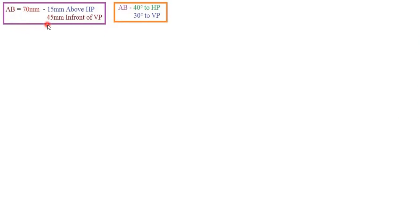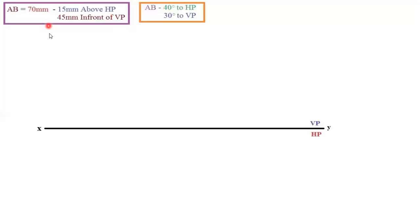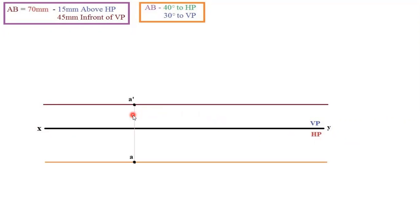So AB is 70mm and one point will be 15mm above HP and 45mm in front of VP. The first step is to draw a reference line. XY is your reference line and we need to write VP and HP — VP means vertical plane, HP means horizontal plane. The next step is plotting the point. They clearly mention that one point will be 15mm above HP. So from the reference axis, take 15mm distance and draw a line. And from the reference axis, take 45mm below it and draw a line. In this line, you can keep a point anywhere.